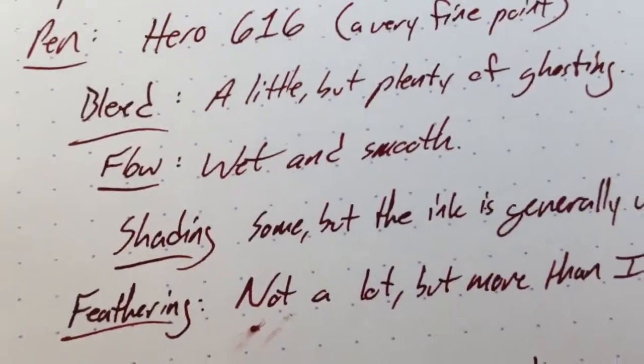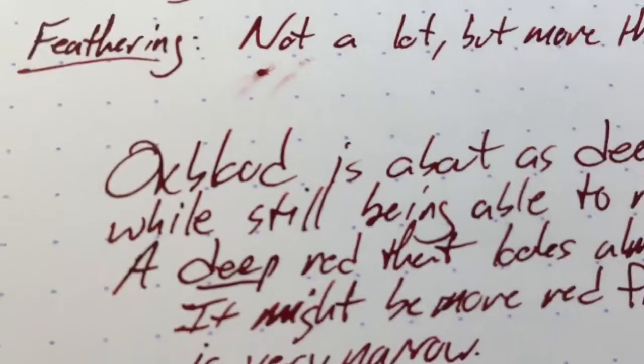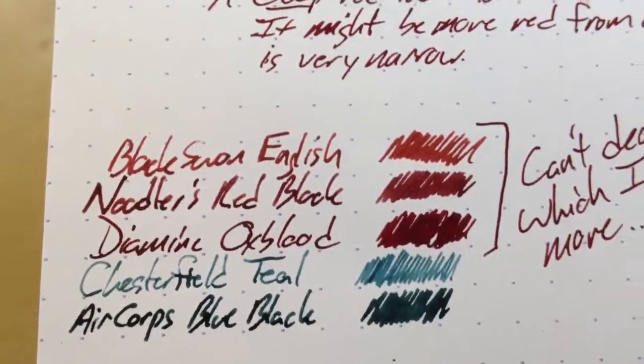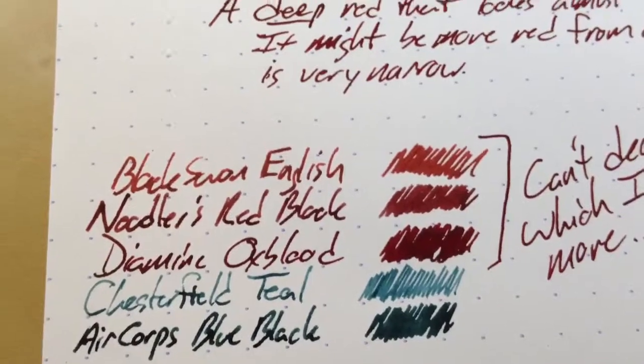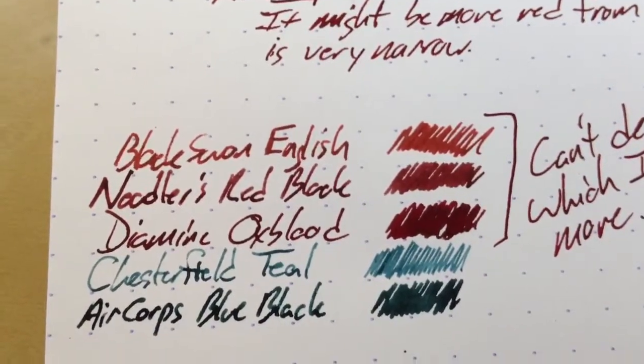It's a super dark cherry color, like a black cherry almost, very close to just being straight up black from any distance, but as we move down here, you can see that it's pretty close to the red-black and significantly lighter than the black swan English roses.